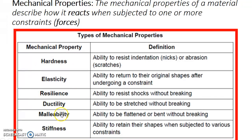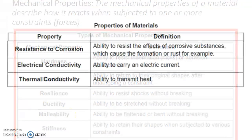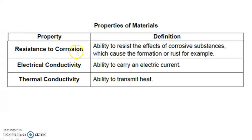Other properties include resistance to corrosion, such as rusting — we use materials like plastic to help prevent corrosion, or if there will be corrosion we need to apply a liquid to protect against it. Electrical conductivity is the ability to carry an electric current, and thermal conductivity is the same concept but for the ability to transmit heat.